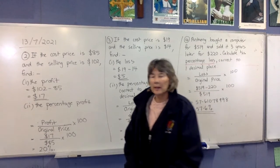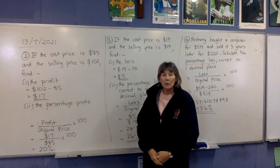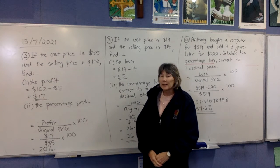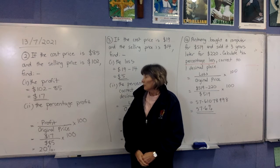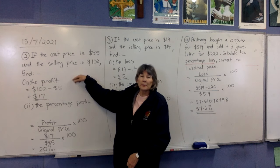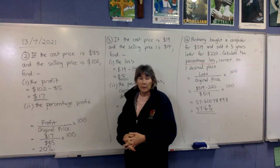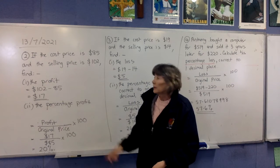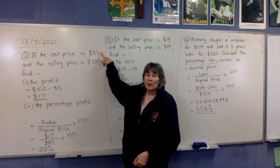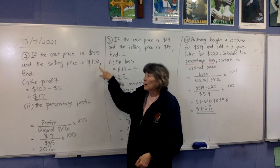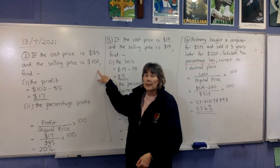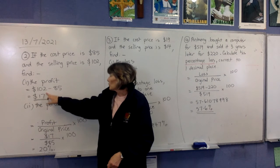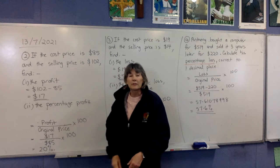Continuing on with our lesson today, second example: if the cost price is $85 and the selling price is $102, find the profit. They've told you it is a profit — you don't need to work that out. You can see it because it went from a cost price of $85 up to $102 when they sold it, so they made a profit. The profit is the difference between those two numbers: $102 minus $85 gives you a $17 profit.